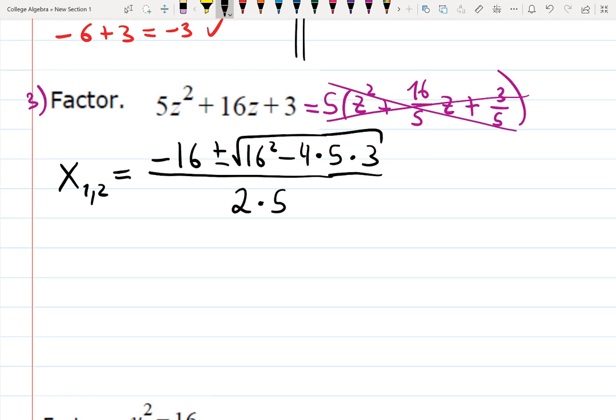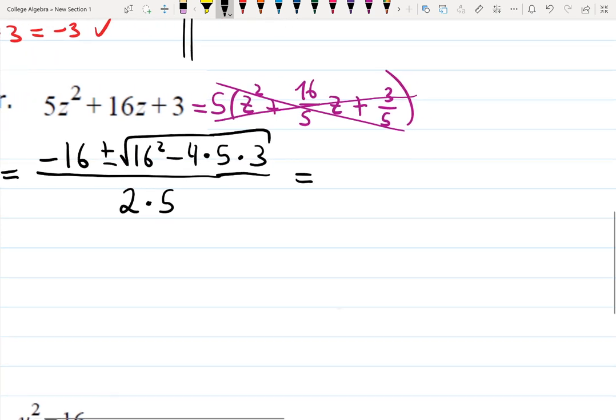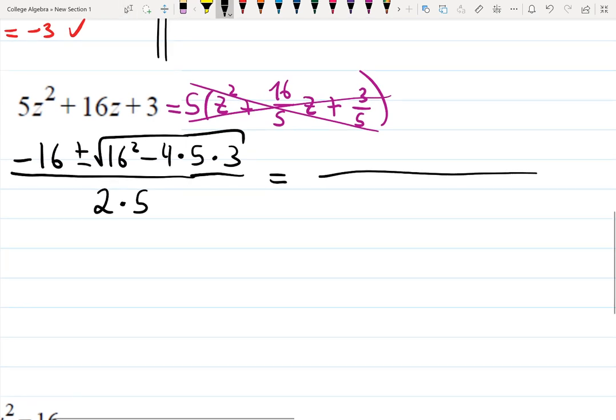So, now I carefully simplify everything, and I will have, I hope to have good numbers inside of the square root, because that's not always the case. So, let's see. I do have 10 in front, and minus 16 in front, plus or minus, and I have a square root.